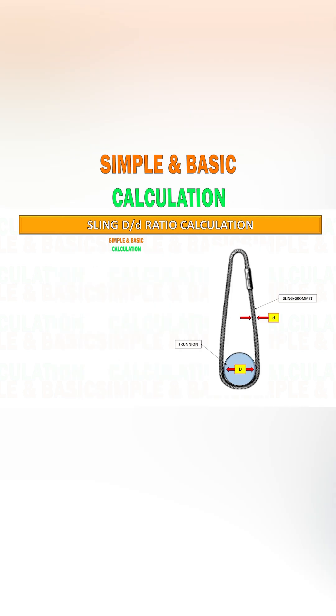Example: Based on the below given data, we will calculate the reduction of sling when it bends to the trunnion of the cargo. Trunnion diameter is 525 millimeter and the sling diameter is 66 millimeter.